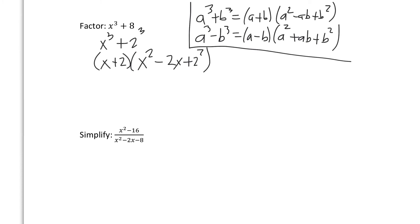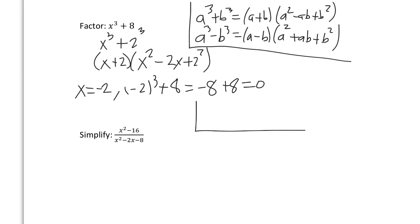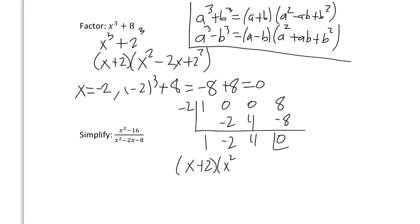If you're still doubtful the formula is correct, we can verify using synthetic division on x cubed plus 8. Plugging in x equals negative 2 gives negative 8 plus 8 equals 0, so negative 2 is a root. Setting up synthetic division with coefficients 1, 0, 0, 8 and dividing by negative 2 gives x plus 2 times x squared minus 2x plus 4 — the same answer as the formula.